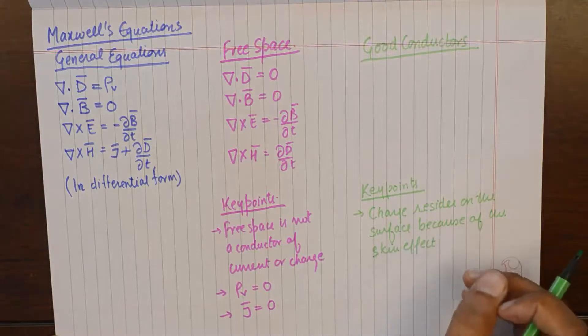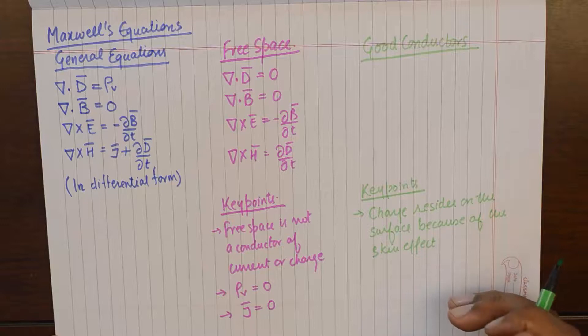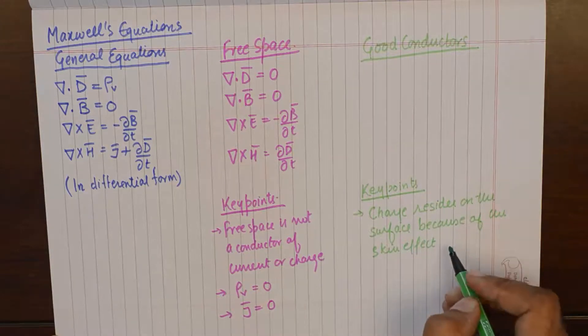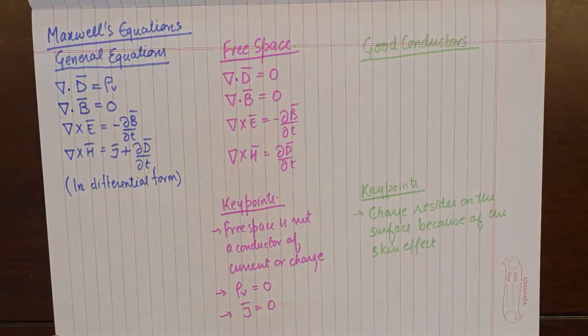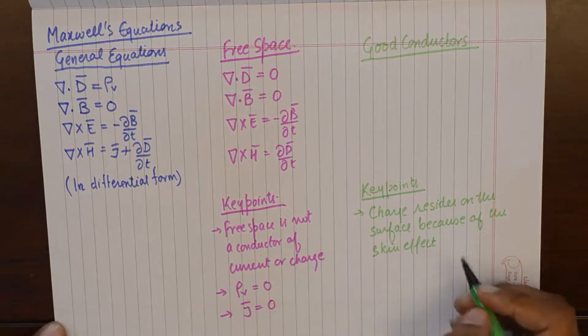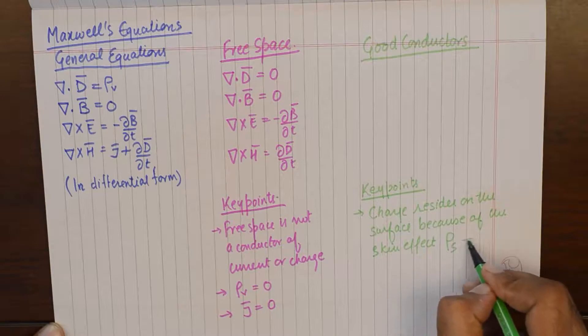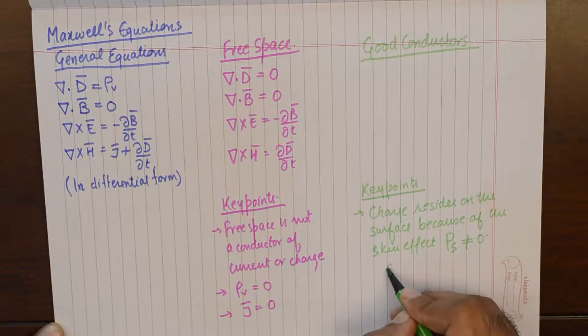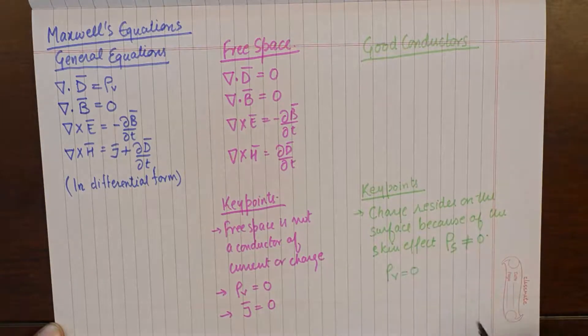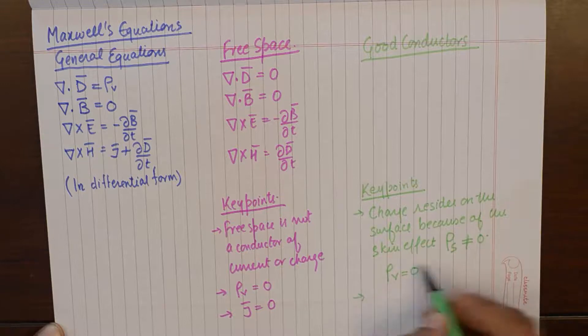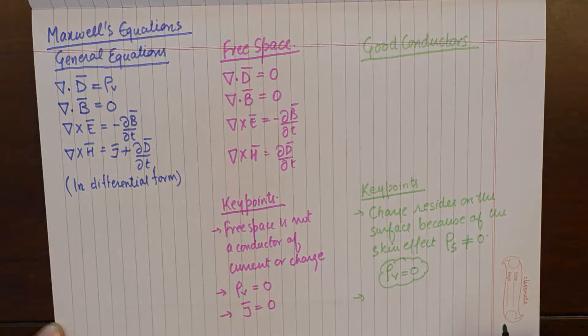There shall be no charge within the volume of a good conductor. Although charge will be there, it will be there on the surface. So ρs will not be equivalent to zero, however ρv will be equivalent to zero in case of good conductors.